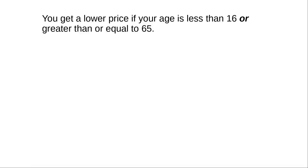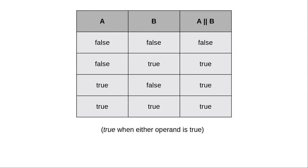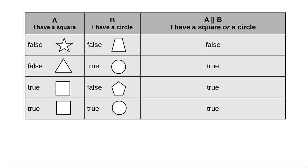Another way to combine conditions is with OR. You want to do something when either one of two conditions is true. Here's how we write that in Java, using two vertical bars in a row to mean OR. On US keyboards, the vertical bar is on the key with the backslash — it may be shown as a broken vertical bar to distinguish it from the capital letter I. Here's the truth table for OR. The only part that seems weird to people is the last case: if you have both a square and a circle, you still have at least one of them, so this turns out to be true.